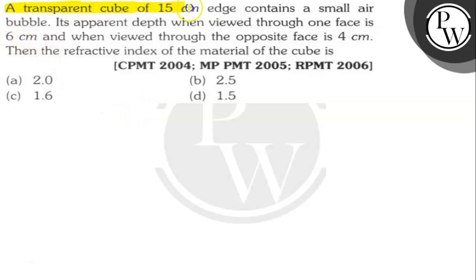A transparent cube of 15 cm edge contains a small air bubble. Its apparent depth when viewed through one face is 6 cm and when viewed through the opposite face is 4 cm. Then the refractive index of the material of the cube is what?